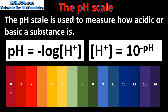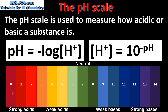The pH scale uses numbers ranging from 0 to 14. Here we can see the colors associated with each pH value in universal indicator. Strong acids usually have pH values of between 0 and 2. Weak acids usually have pH values of between 3 and 6. pH 7 is neutral. Weak bases have pH values of around 8 to 11, and strong bases have pH values from 12 to 14.